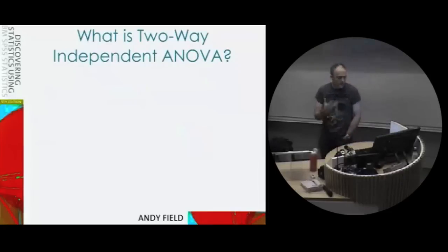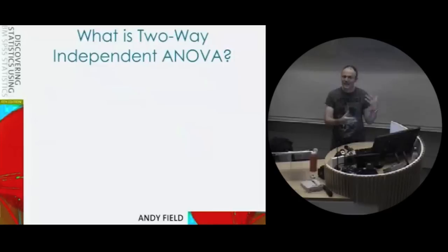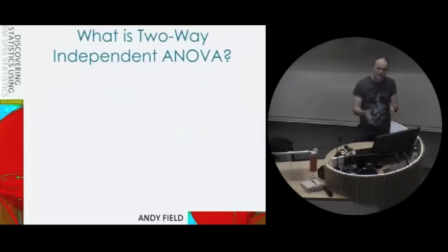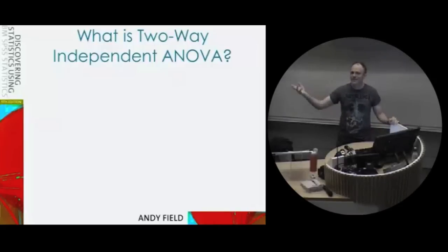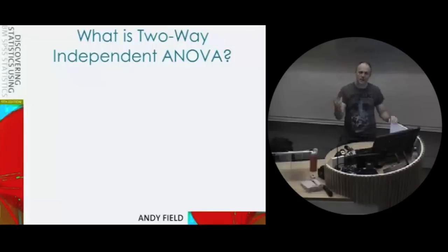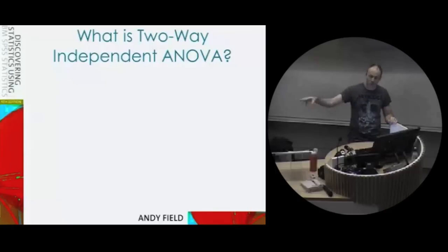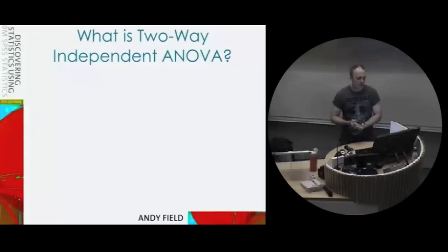What is a two-way independent ANOVA? When you read journal articles, you'll see that ANOVA is used a lot, because in many situations psychologists will be manipulating independent variables using different groups of people, or as we'll come on to next week, subjecting the same people to different experimental conditions. So far we've looked at where you only have one grouping variable. In our Viagra example, we had a libido group, a low-dose group, and a high-dose group containing different people — that would be known as a one-way ANOVA. The 'one-way' just refers to the fact that there's one independent variable.